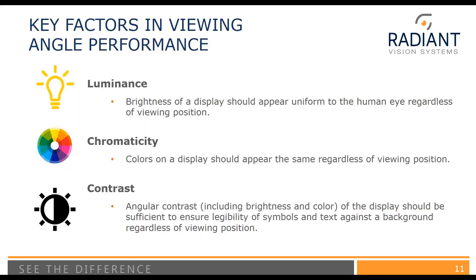Some of the key things that you try to measure when measuring viewing angle would be luminance, because the brightness of the display should appear uniform to the human eye regardless of viewing position. Chromaticity, because the colors of the display should appear the same regardless of viewing position. And angular contrast, which includes both brightness and color of the display, because the display should be of sufficient legibility that the symbols and text are visible against the background regardless of viewing position.